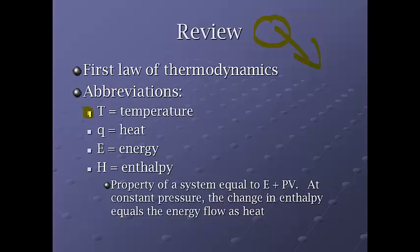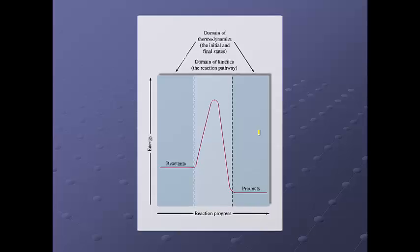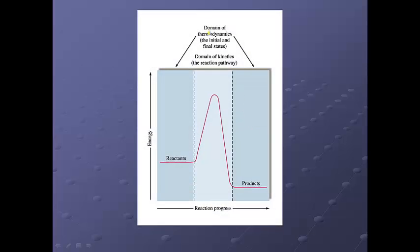Now, as a reminder, some of our abbreviations: T is temperature, Q is equal to heat, E is equal to energy, and H is this term called enthalpy. And for a lot of times, the way that we study reactions, the change in enthalpy can equal the energy flow as heat. So a lot of times we had our delta H, and delta H could equal our heat flow to make the math a little bit easier.